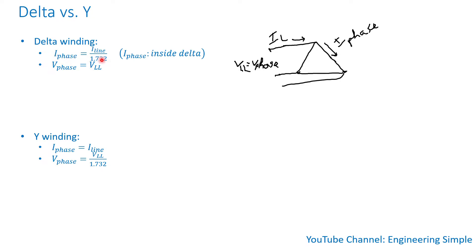In a delta winding, the phase current — the current flowing inside the delta — is equal to the line current divided by √3.